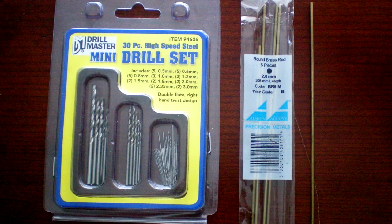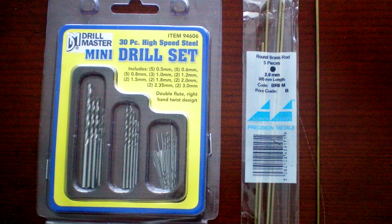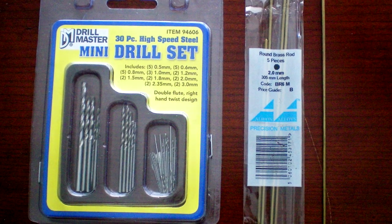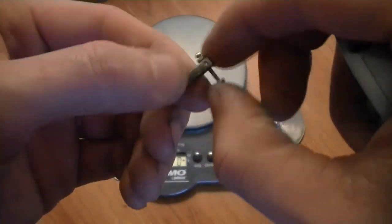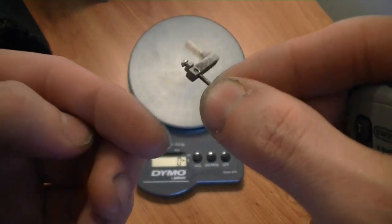I have since purchased some 2 millimeter brass rod through eBay and I found a 2 millimeter drill bit at Harbor Freight. It's a lot easier to cut off a length of 2 millimeter brass rod and fit it into a 2 millimeter hole.